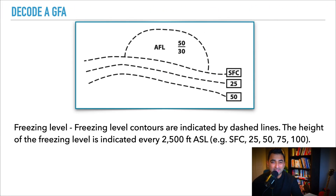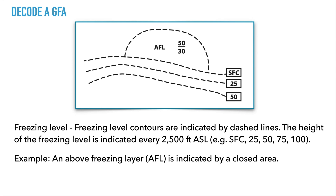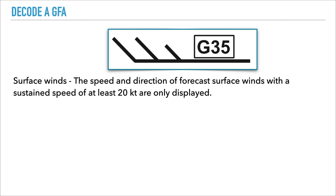This next image depicts the freezing level. It looks very similar to the isobars, except the lines for the freezing level are dashed lines. So when you look at the chart, look for dashed lines for freezing level and solid lines for isobars. The freezing level contours are indicated by dashed lines, with the height indicated every 2,500 feet ASL. In this picture we have the surface, 2,500 feet, and 5,000 feet depicted. The above example shows an above-freezing layer between 3,000 feet and 5,000 feet within the enclosed area.